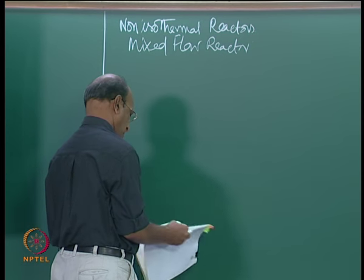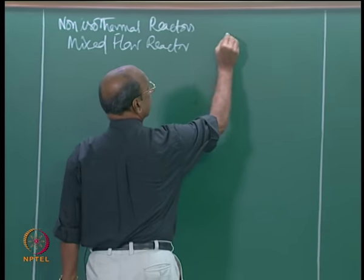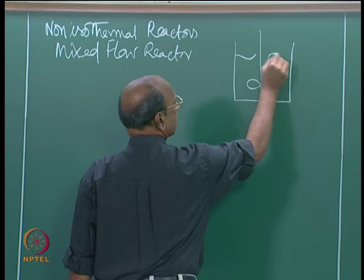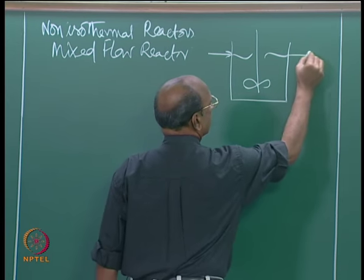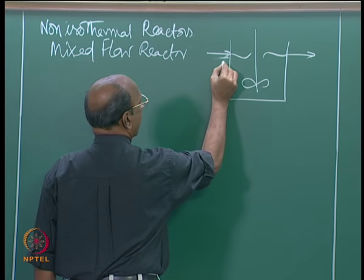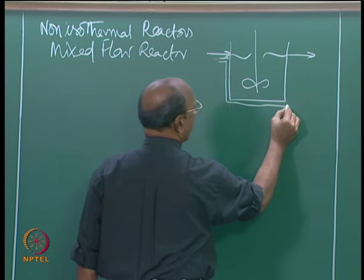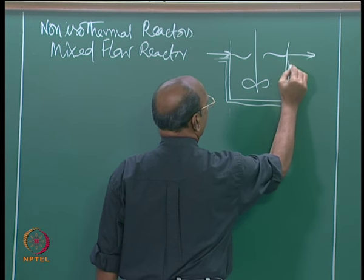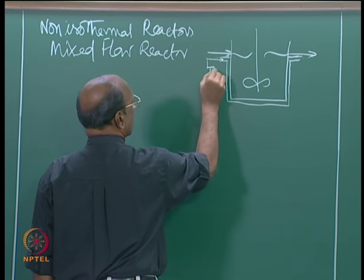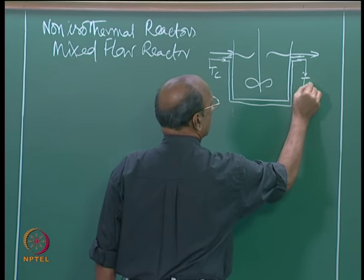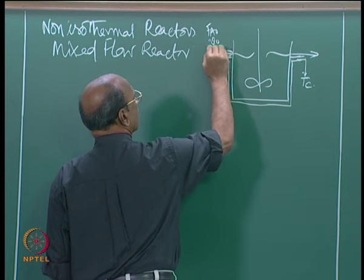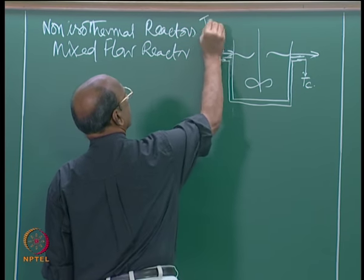As usual we have to draw the picture here - this is entering and leaving. This is Tc in, Tc out, this is F_a0, V0, X_a0, and importantly T0.